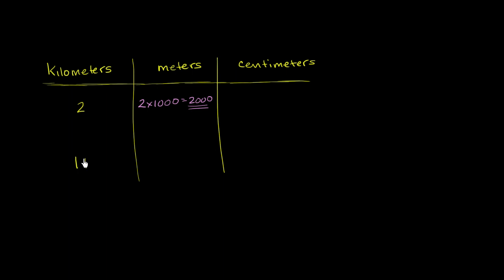If we wanted to convert the 11 kilometers into meters, it's the same thing. 11 kilometers means 1,000 meters. So you could think of it as 11 times 1,000 meters. So 11 times 1,000 is going to be 11,000 meters.